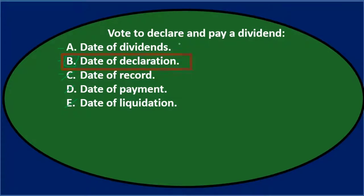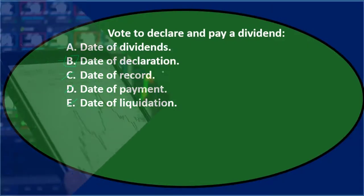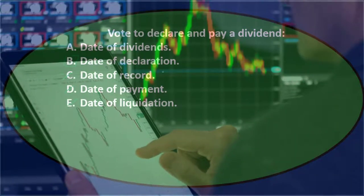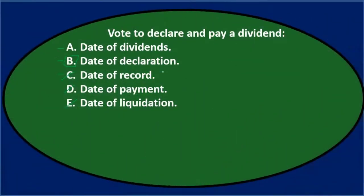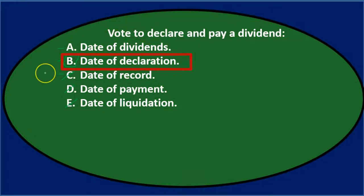Note that when you think about dividends, there are three dates. There's the date of declaration. The date of record means that whoever owns the stock at that point is going to get the dividend — if there's trading of stocks, whoever owned it at the date of record is the one that gets paid the dividend. And then the date of payment, when we actually pay the dividend. Final answer: vote to declare and pay dividend — B, date of declaration.